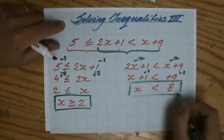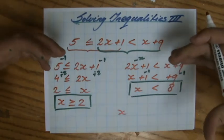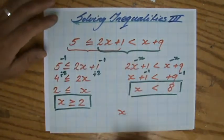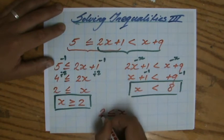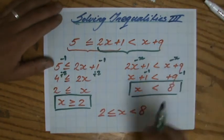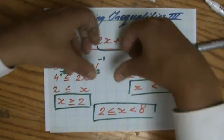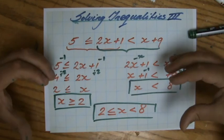So it needs to be bigger or equal to 2. Now I'm basically going to combine my two answers again. x needs to be bigger or equal to 2 as long as it is smaller than 8. So you break it up, you solve them, and you combine them again.